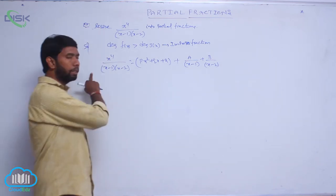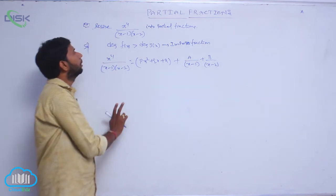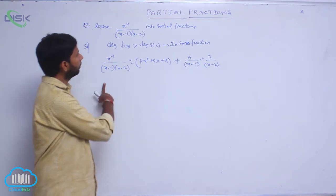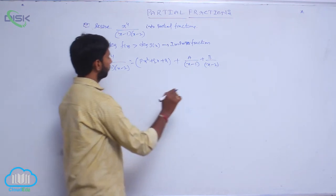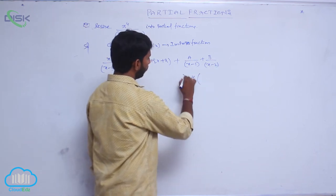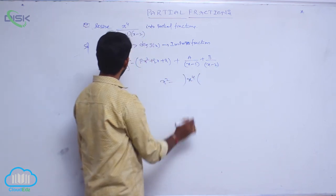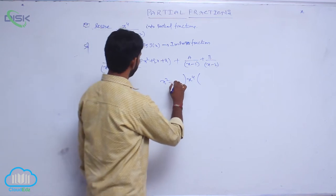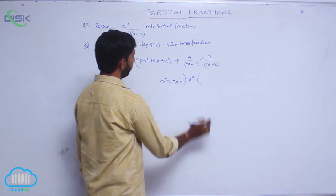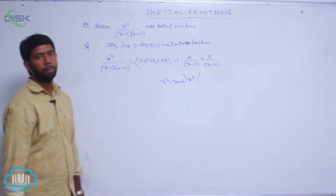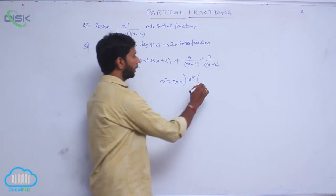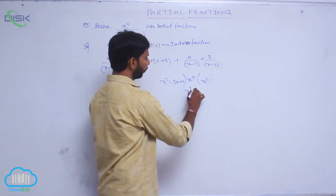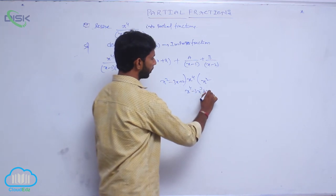Here the degree of the numerator is greater than the degree of the denominator. Using the division algorithm, divide the numerator by the denominator — that is, divide x to the power 4 by (x squared minus 3x plus 2). Multiplying x squared: x to the power 4 minus 3x cubed plus 2x squared.